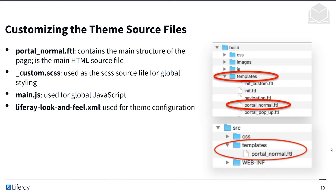After generating a theme, you'll need to customize the source files. Portal Normal FTL is the FreeMarker template containing the main structure of the page — the main HTML source file. If you want something in a different location or removed altogether, you'll modify it here. Underscore custom SCSS is the styling source file for all global styling, such as global font size or font changes. Main.js is used for global JavaScript — helpful functions or code that runs on page load. Finally, there's the theme configuration file: Liferay look-and-feel XML.